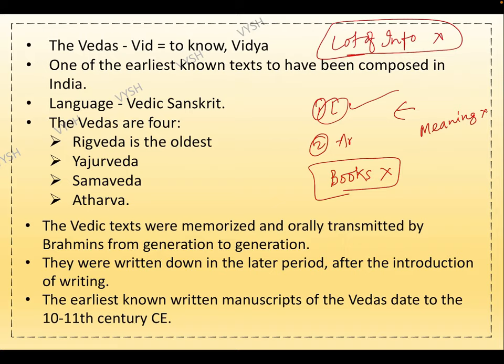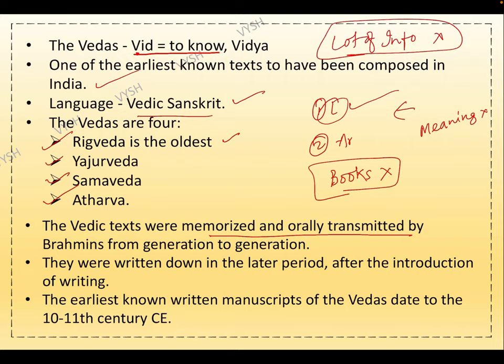The word Veda means Vidya. It is one of the earliest known texts composed in India, written in Vedic Sanskrit. There are four Vedas: Rigveda (the oldest), Yajurveda, Samaveda, and Atharvaveda. The Vedic texts were memorized and orally transmitted by Brahmins from generation to generation, and written down in the later period. The earliest known written manuscripts of the Vedas date to the 10th–11th centuries CE.